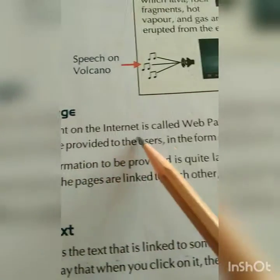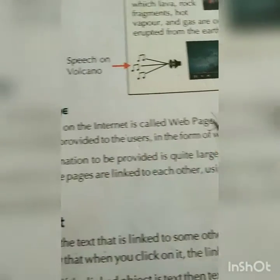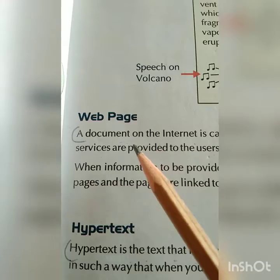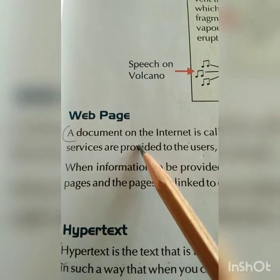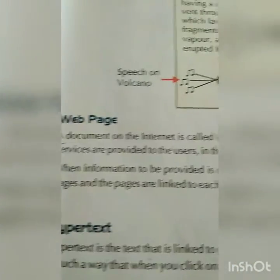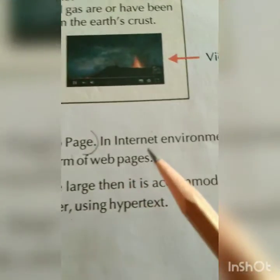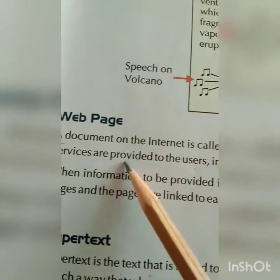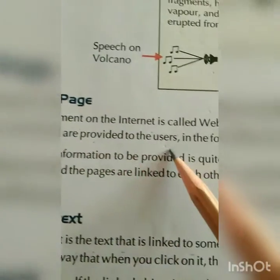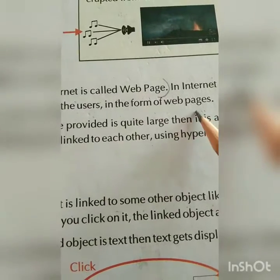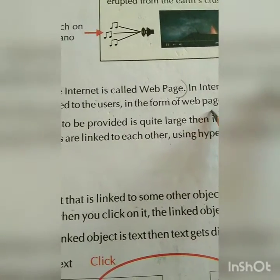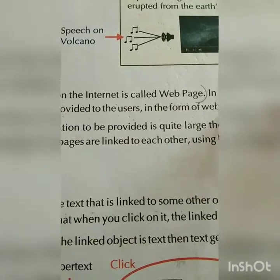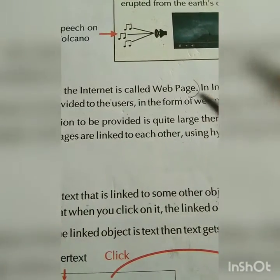Now, what is a web page? A document on the internet is called a web page — one type of page on the internet where you are doing your work, known as a web page or document page. In the internet environment, information and services are provided to users in the form of web pages.